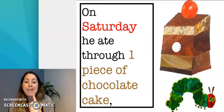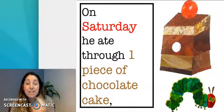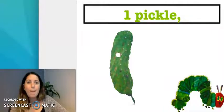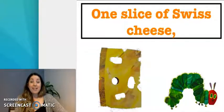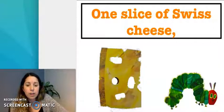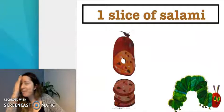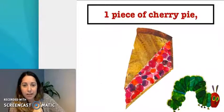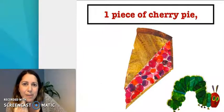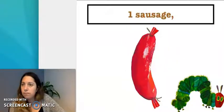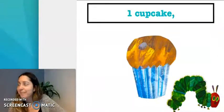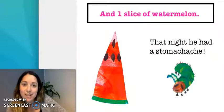Oh my God. On Saturday, he ate through one piece of chocolate cake. One piece of chocolate cake. A piece of chocolate cake. And one ice cream cone. And what else? One pickle. And one slice of Swiss cheese. And one slice of salami. Oh my God. So much food. And a lollipop. And still more. One piece of cherry pie. Una pie. A pie. And one sausage. Oh my God. So much food. One cupcake. And one slice of watermelon.